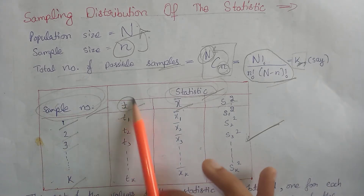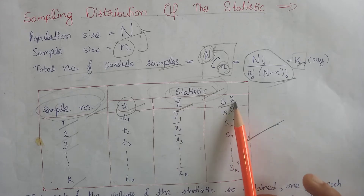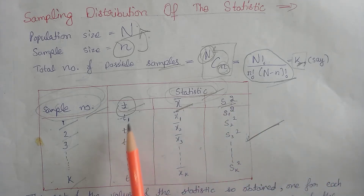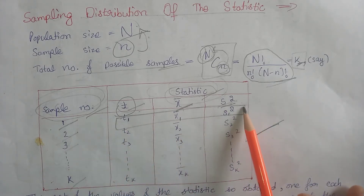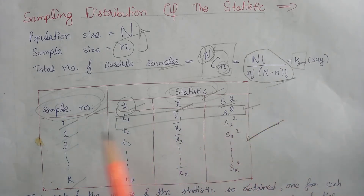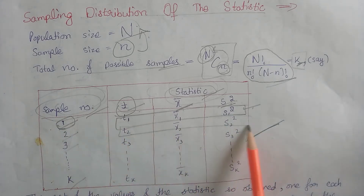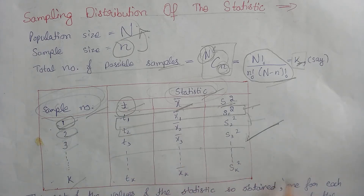In the column of statistics, we use three types of statistics. The first statistic is T, which is the symbol for sample mean, and we also have the symbol for sample variance. These are the values of the statistics for sample number one, these are the values for sample number two, and so on.